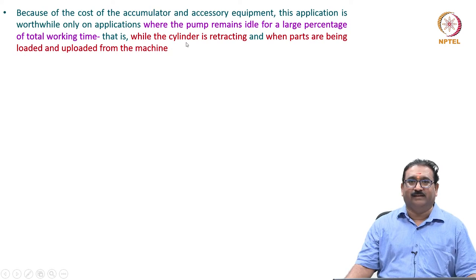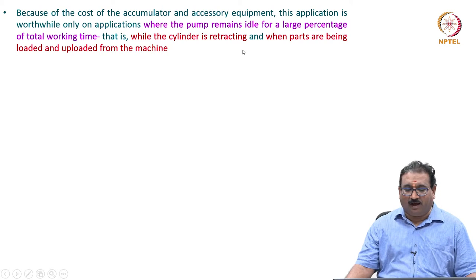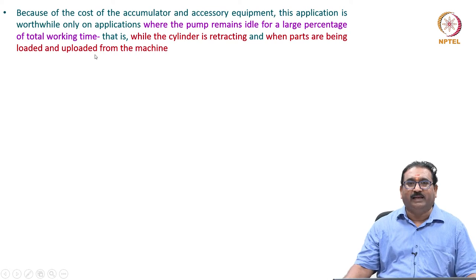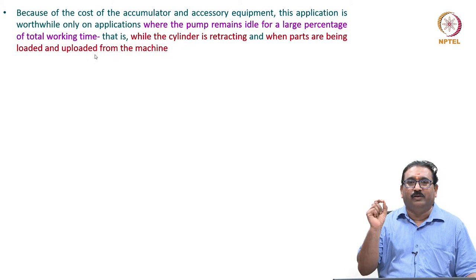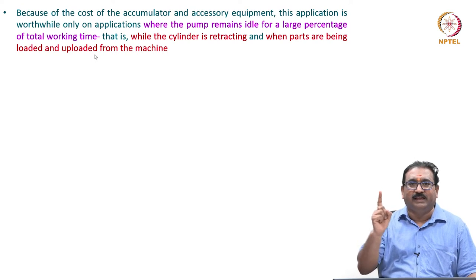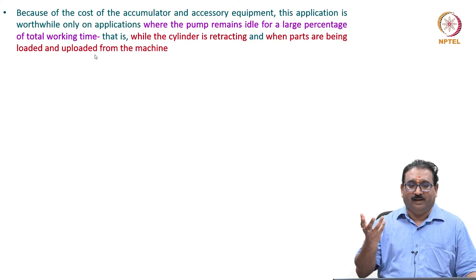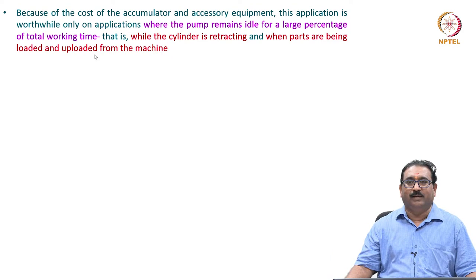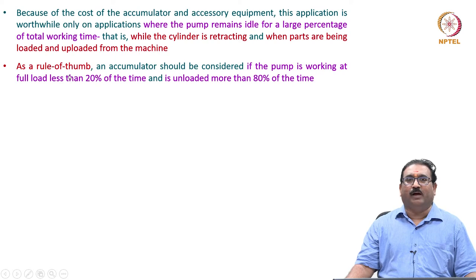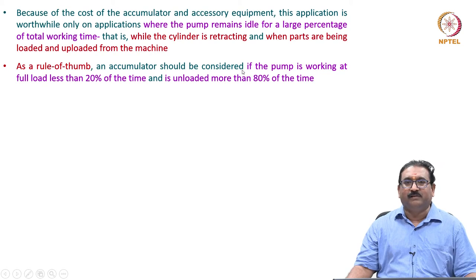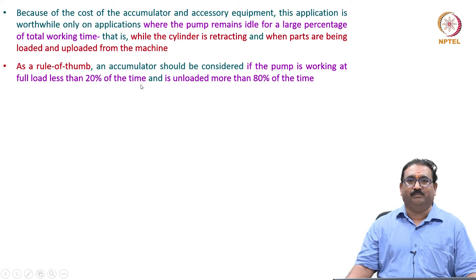That is, while the cylinder is retracting and when parts are being loaded and unloaded from the machine, no actual work is going on. As a rule of thumb, an accumulator should be considered if the pump is working at full load less than 20 percent of the time and is unloaded more than 80 percent of the time.